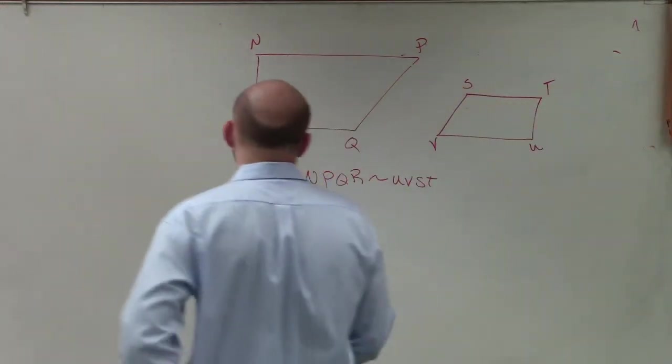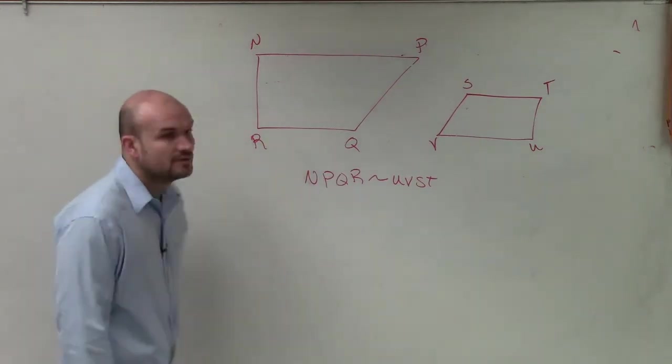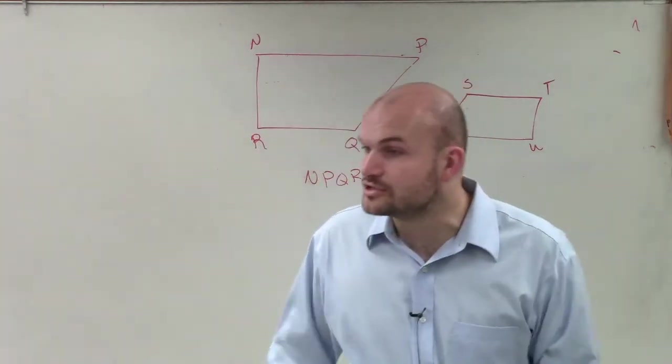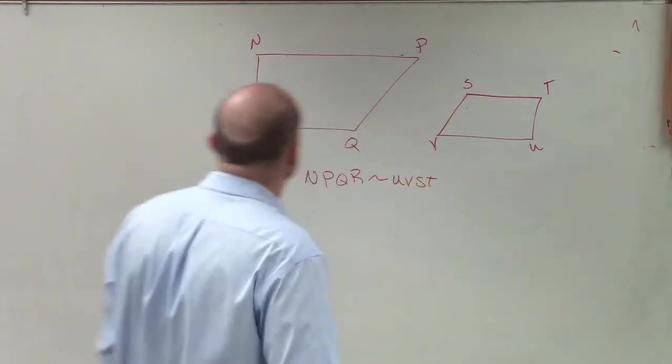So what they're saying in this statement is NPQR, which is this little quadrilateral, is similar to another quadrilateral, which we had UVST.